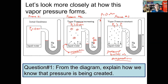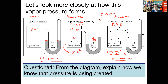Each liquid has a unique vapor pressure. I want to repeat that because we can use that vapor pressure to possibly identify what the liquid is. Vapor pressure is one of the properties of liquids — it is what we refer to as an intensive property. It's unique to that particular liquid and is not dependent upon the mass or the volume of the liquid.